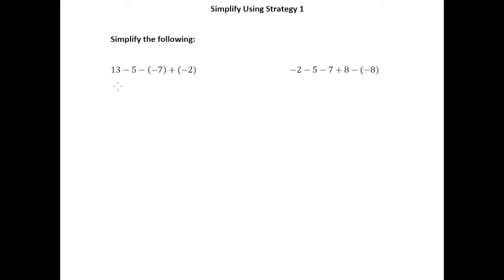So in this first example here we have 13 minus 5 minus negative 7 plus negative 2. So the first thing I'm going to do is I'm going to identify all of the subtraction signs and I'm just going to go ahead and circle each one.